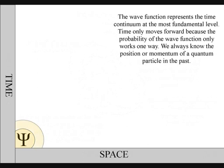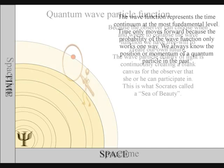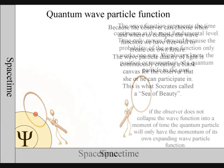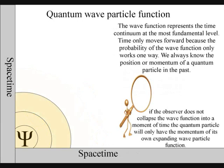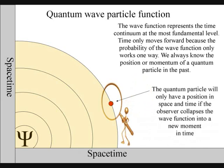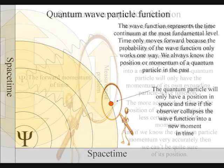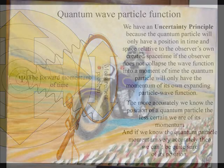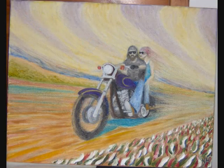When we observe only one atom, we see an expanding quantum wave particle function that the observer can collapse into a quantum particle that will have its own position in time and space that never existed before the wave function collapsed. This gives us the uncertainty principle of quantum physics, and it also gives us free will to create our own future spacetime.